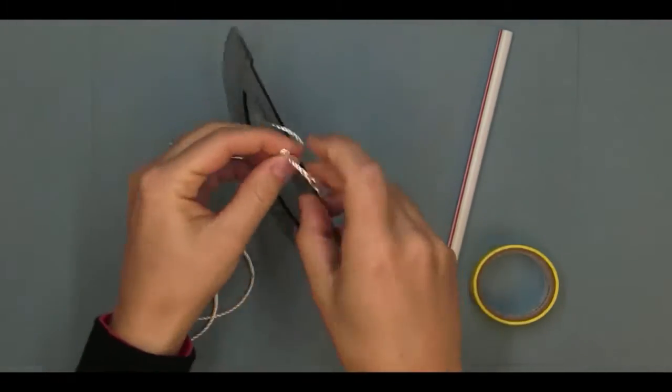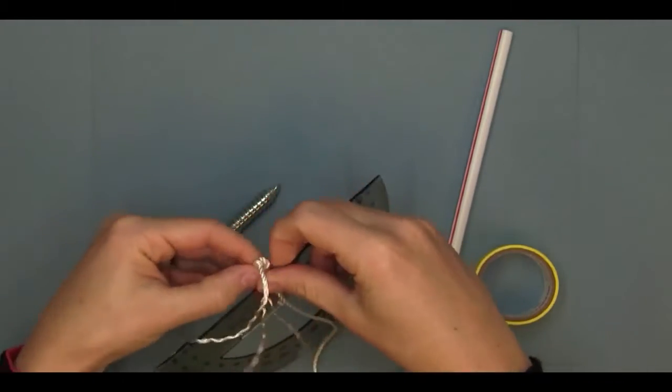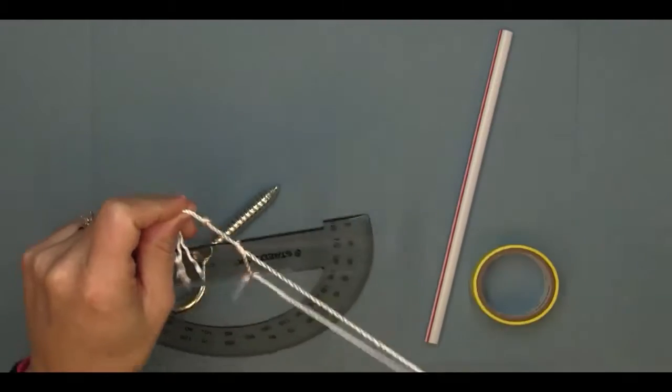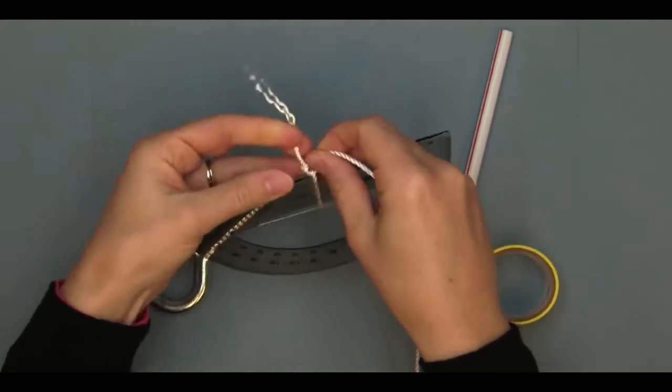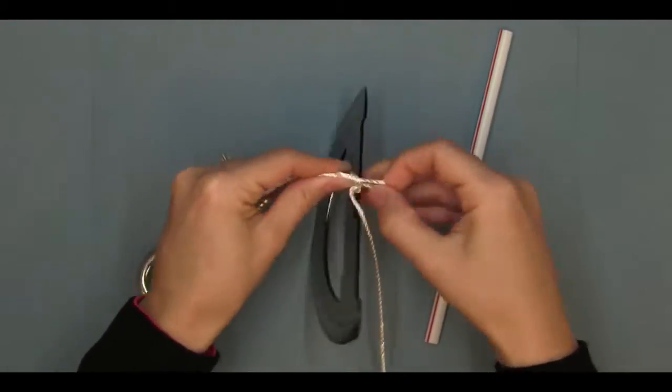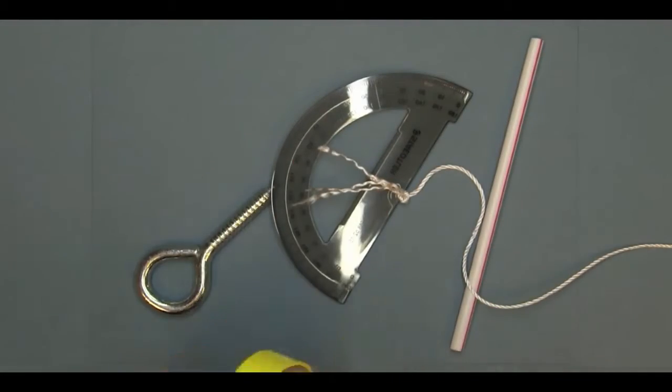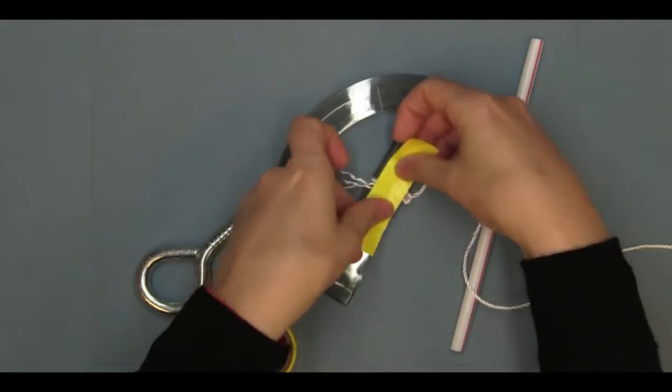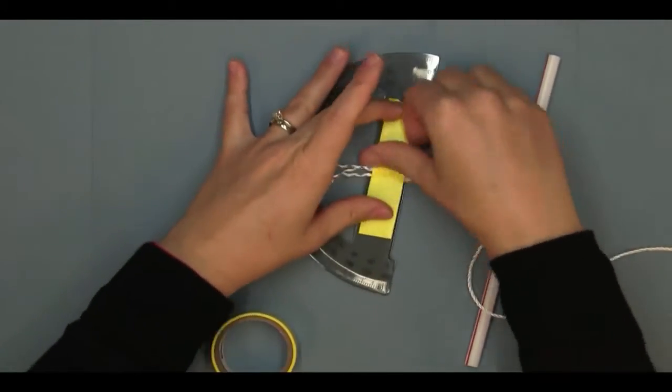First I'm going to tie the piece of string onto the protractor at the point on the protractor where you measure angles from. I'm trying to tie a secure knot, but you notice that the string is still sliding around quite a bit. So I'm going to grab a piece of tape to reinforce it and hold the string at the exact position that I want it. That looks pretty good, so that should do it.